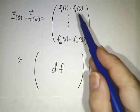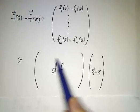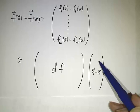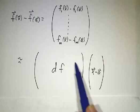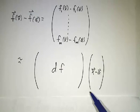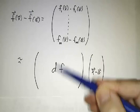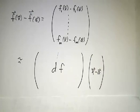And the amount that f_1 has changed is the gradient of f_1 times (x-a). The amount that f_2 has changed is the gradient of f_2 times (x-a). You put them all together, and you get this big matrix df times (x-a).